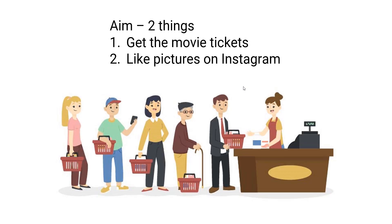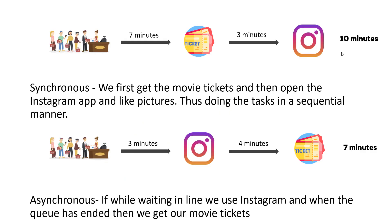In the first way, you wait in line and only after you've gotten the tickets — let's say after waiting seven minutes — you then like pictures on Instagram, which takes around three minutes, for a total of ten minutes spent on two tasks. This is known as synchronous programming: doing tasks sequentially, one after the other.